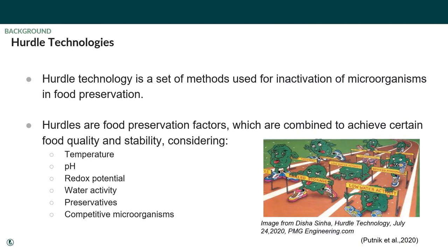I wanted to introduce a food processing concept called hurdle technology — a set of various methods used to inactivate microorganisms from food processing and packaging all the way to product shelf life. For microbial stability, fermentation alone is one hurdle in winemaking, a second hurdle could be sterile filtration, and a third could be SO2 or Velcorin. Factors include temperature, pH, redox potential, water activity, various preservatives, and competitive microorganisms — all important for shelf life improvement in non-alcoholic beverages.